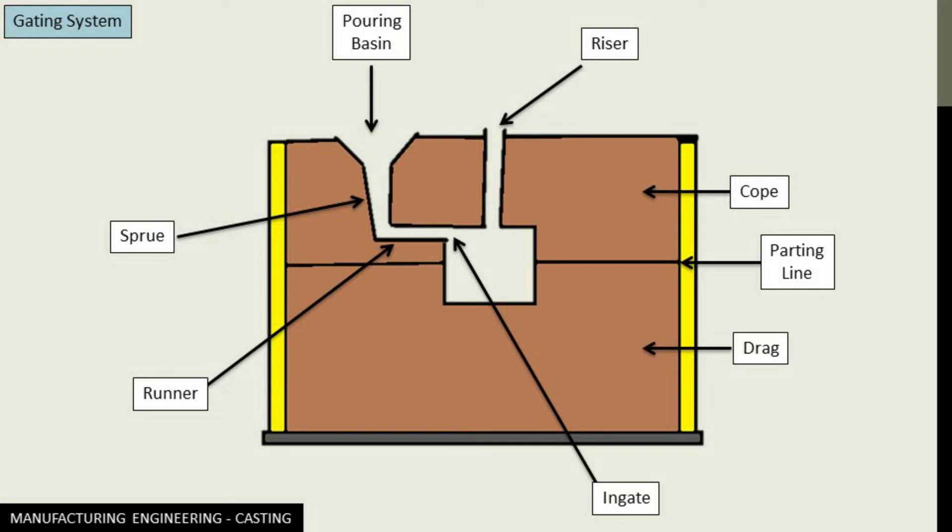So let's begin with understanding the terminologies of the gating system. As you can see here, these are the important elements of the gating system: pouring basin, sprue, runner, ingate, drag, parting line, and cope.